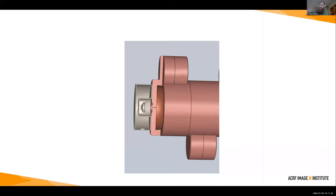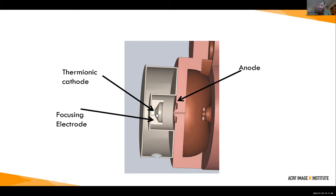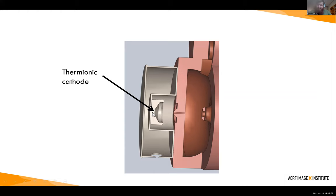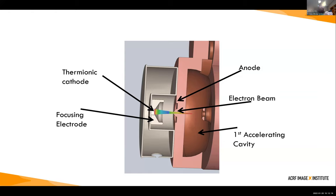The first thing I want to talk about is how we generate electrons — this is called an electron gun. It's comprised of a thermionic cathode (thermionic simply meaning very hot), a few focusing electrodes that help shape the beam, and an anode. The cathode produces electrons and the anode attracts them. We have a very hot cathode which electrons are essentially dying to escape, and the electric field pulls them straight out. With the focusing electrode we shape the beam and it enters into the first accelerating cavity.